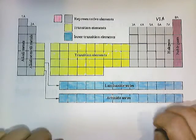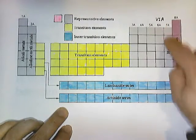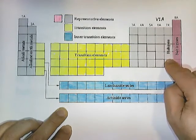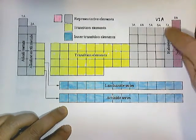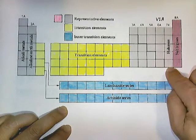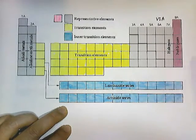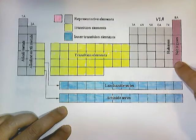Group 17 or 7A, these elements right here, are called the halogens. Have you ever heard of halogen lamps? And group 18 or 8A, these are called the noble gases.